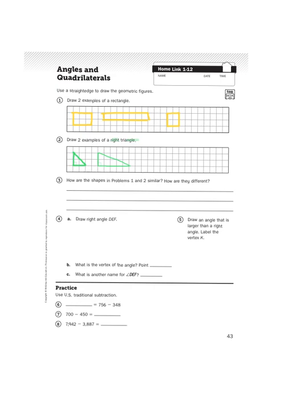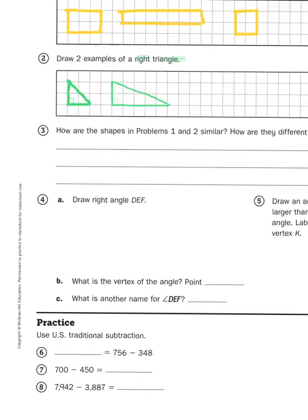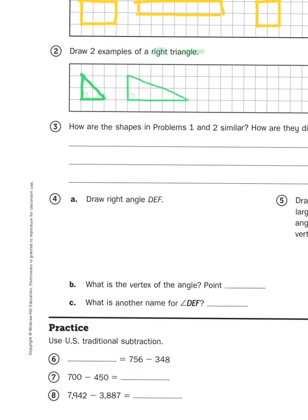Problems four and five ask you to describe angles that you've drawn. And it says number four, draw right angle DEF. Okay, so I'm going to draw a right angle just like I did with the right triangle.